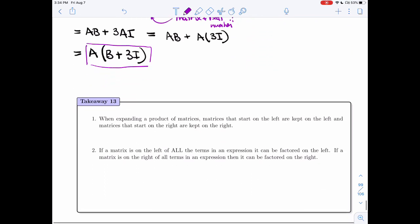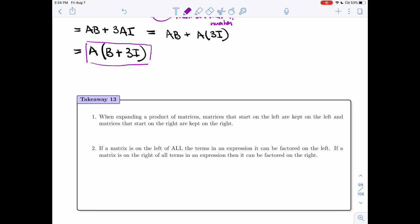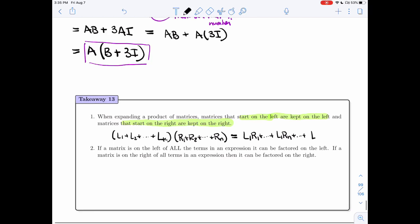So let's recap. If you have a product to expand, matrices that start on the left are kept on the left and matrices that start on the right are kept on the right. So you're not allowed to pass them through each other. So for example, if I have all these matrices on the left, then when I multiply them, I'll get all possible products.